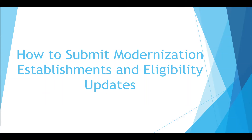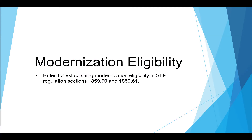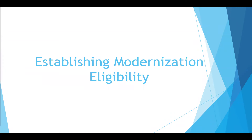Now we're going to go over submitting modernization establishments and adjustments. Rules for establishing modernization eligibility for a school site are written in SFP section 1859.60. Districts request modernization for a site by submitting the eligibility determination form SAB-5003, along with the required documentation. For modernization eligibility, a gross inventory or snapshot of the site is determined and all classrooms owned or leased by the school district on the site generating eligibility are counted per SFP regulation section 1859.61. Now we will create a modernization eligibility establishment application.